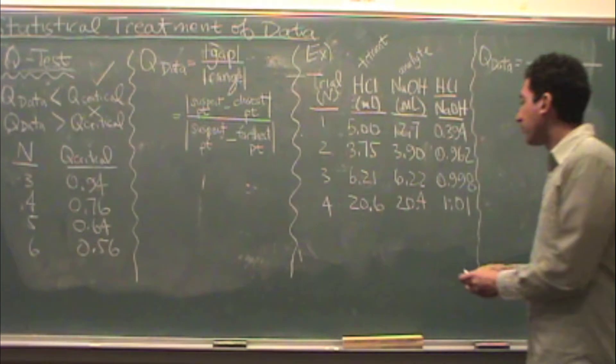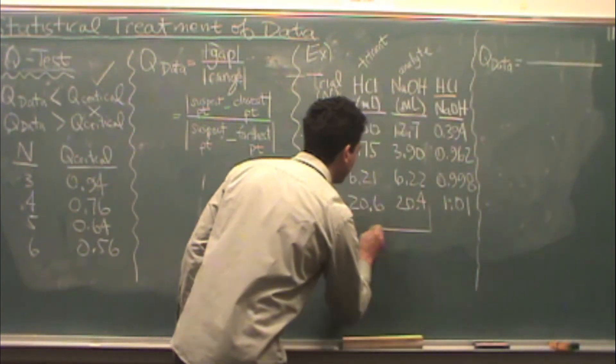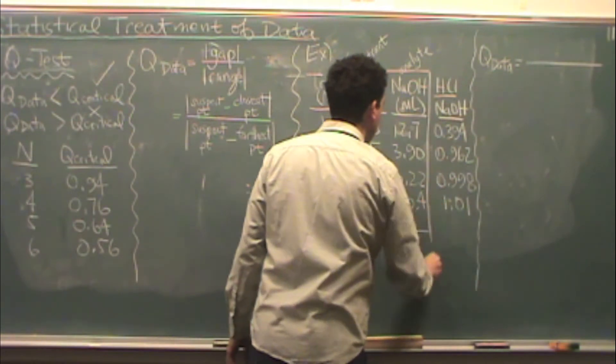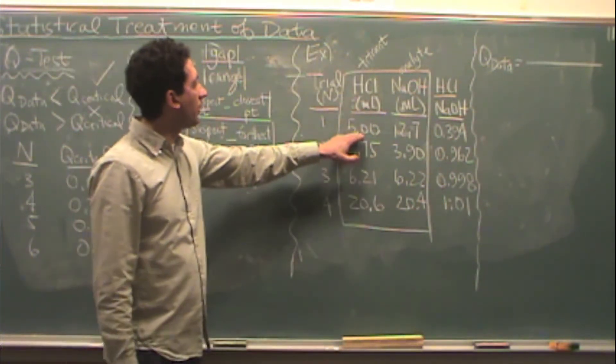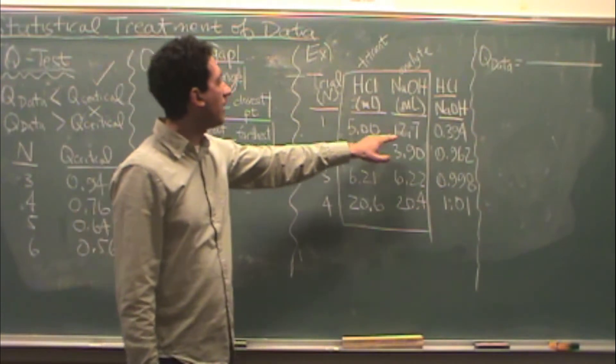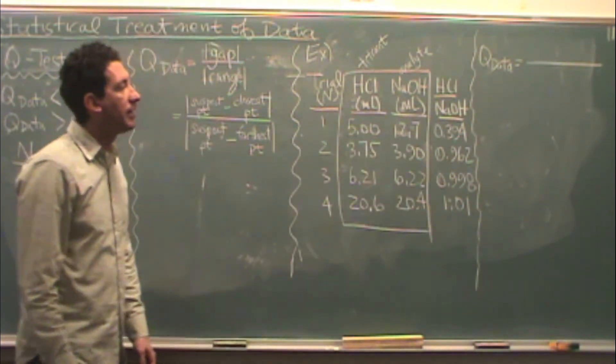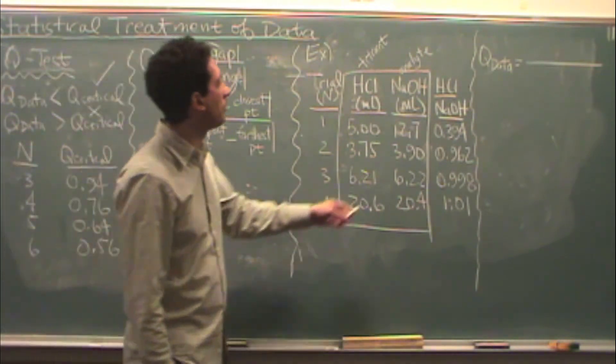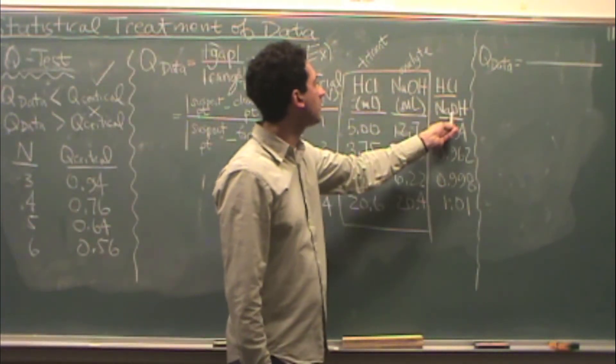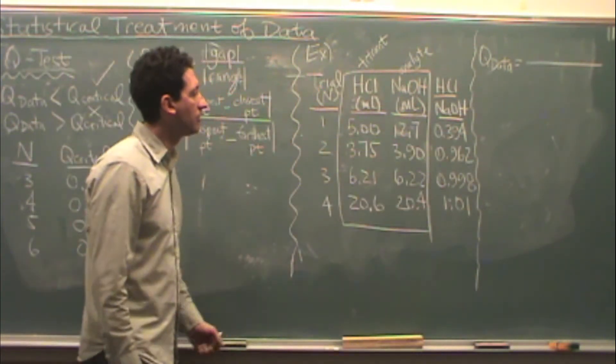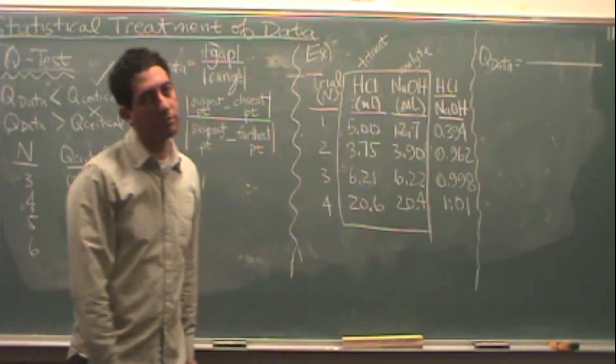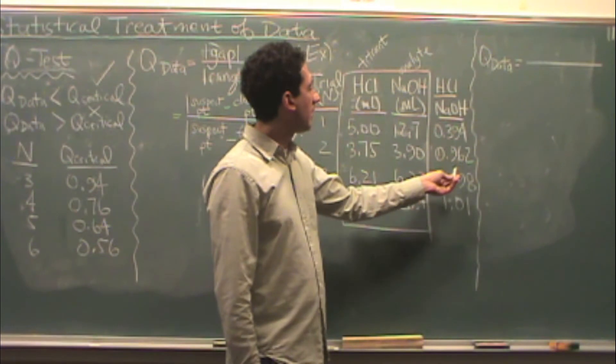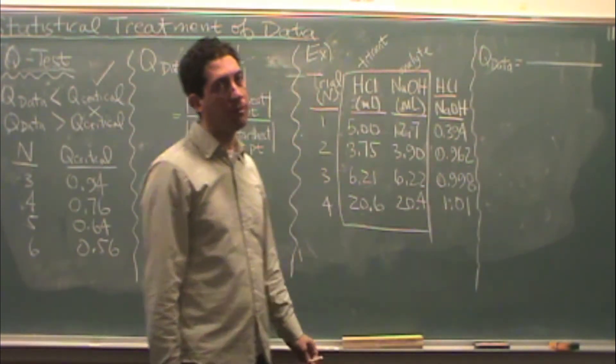And right here these are my data points. I know the volume that I'm titrating and I know the volume of the analyte. And what's helpful often when doing titrations is to know that ratio or the HCl in this case over the sodium hydroxide ratio. So I just literally took those ratios for you to get 0.394, 0.962, 0.998, and 1.01.